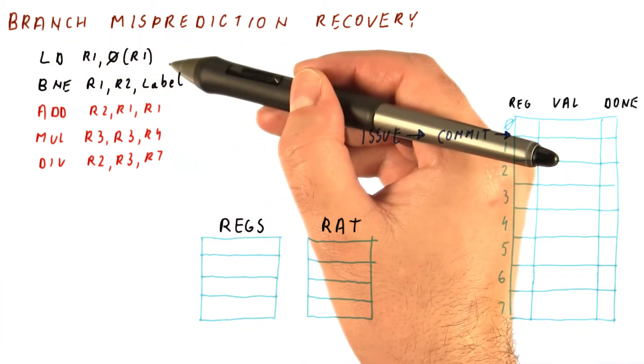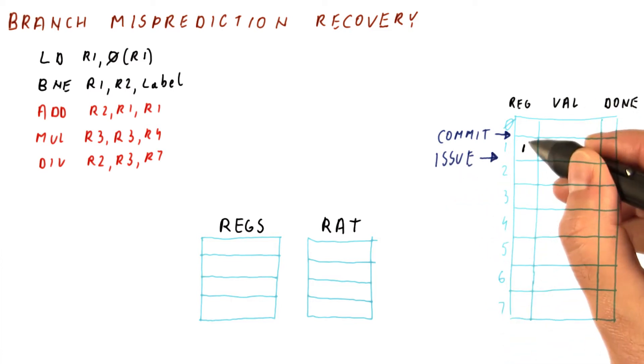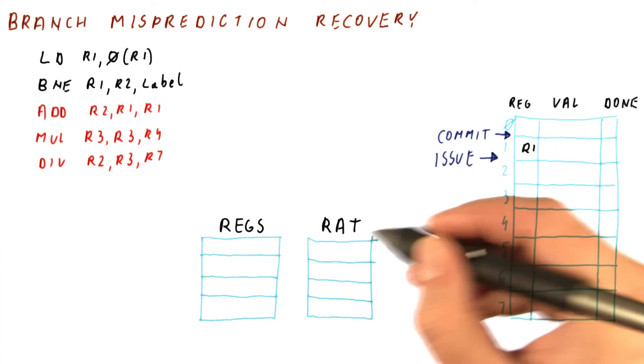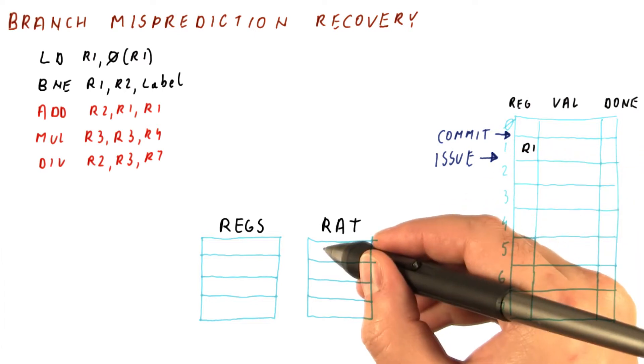Now let's see what happens when we issue the load. We move the issue pointer here, the load produces R1, and R1 here in the RAT is made to point to the ROB1 entry.